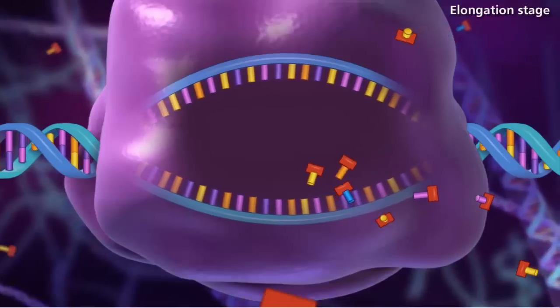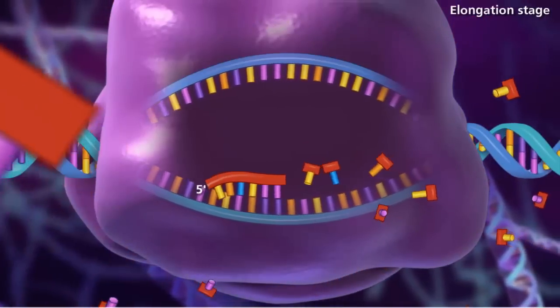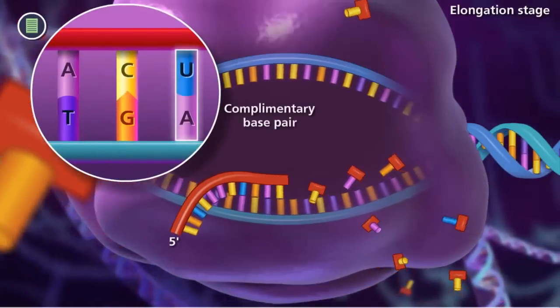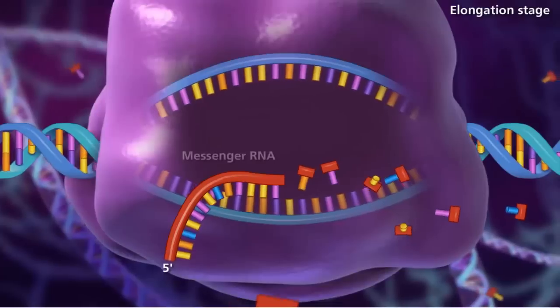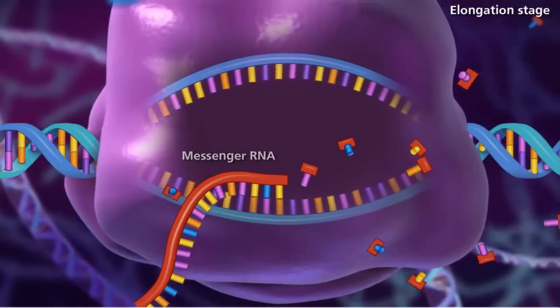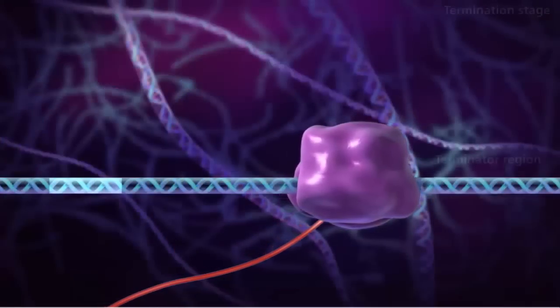Then during elongation, the RNA polymerase slides along the template DNA strand. As the complementary bases pair up, the RNA polymerase links nucleotides to the three prime end of the growing RNA molecule.